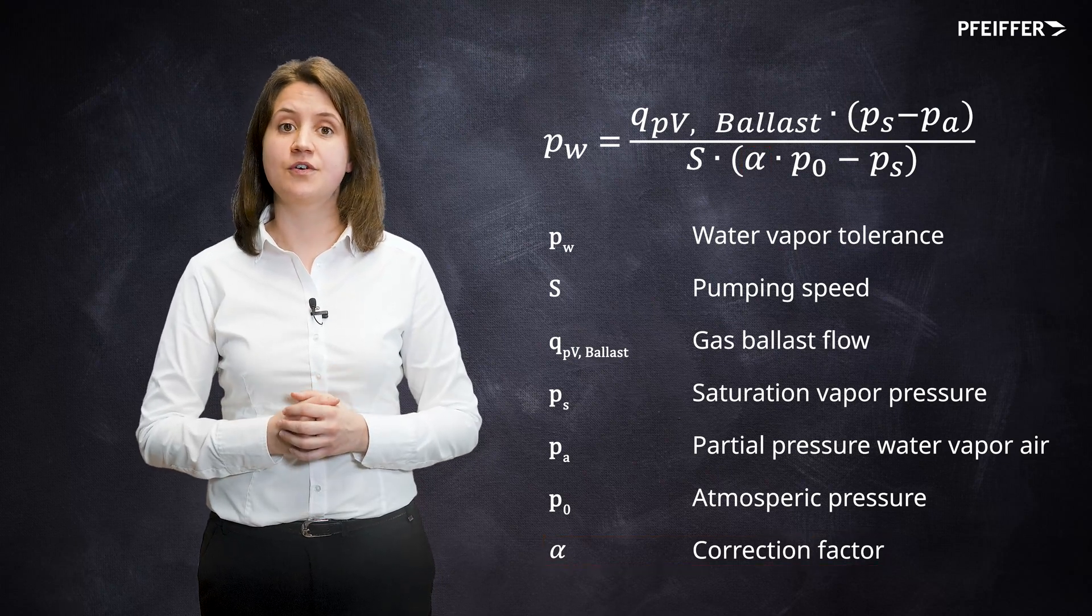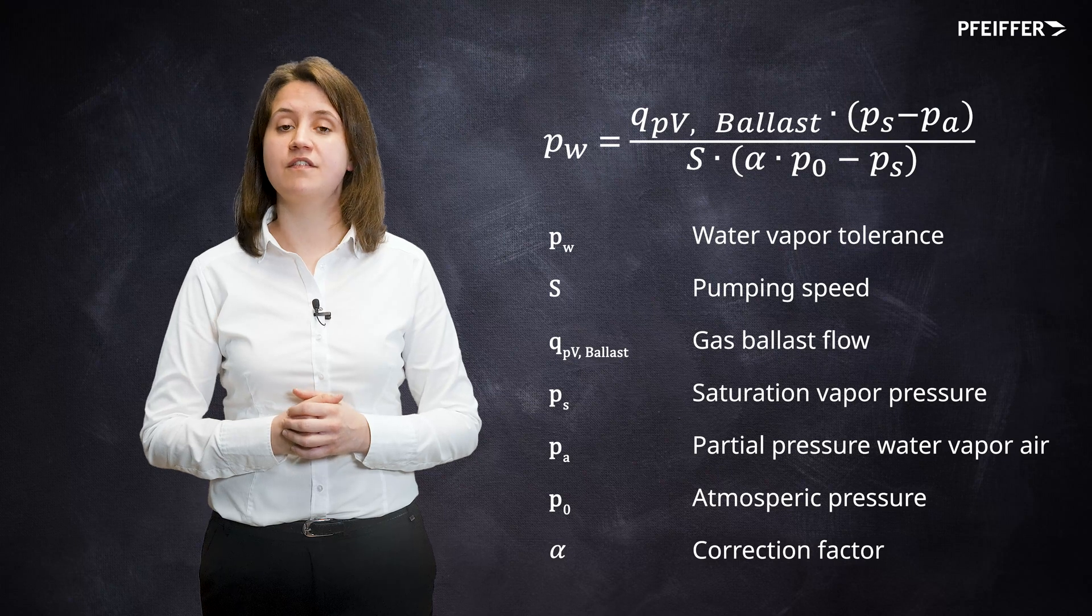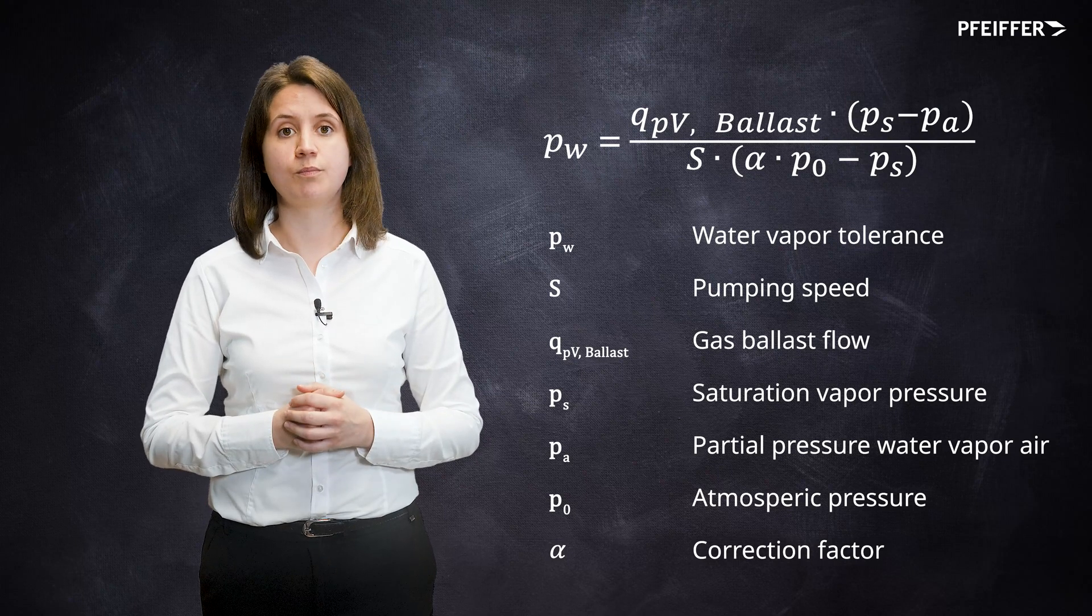Alpha accounts for the extra pressure needed to open the outlet valve and is typically assumed as 1.1.